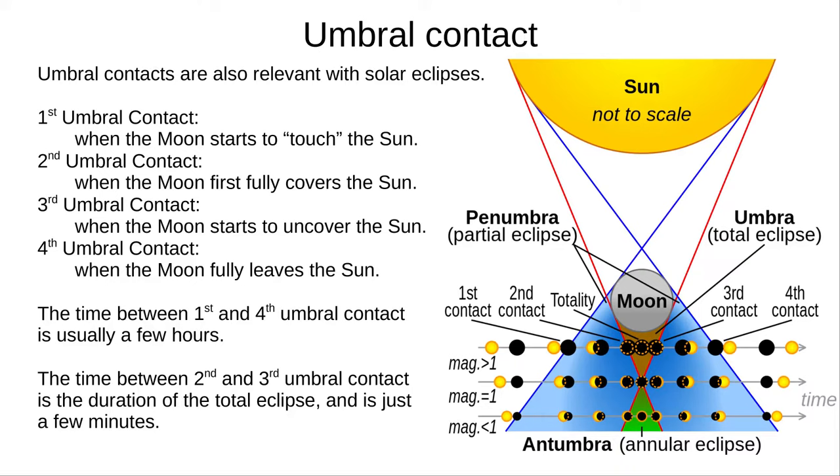Third umbral contact is when the Moon starts to uncover the Sun. And fourth umbral contact is when the Moon fully leaves the Sun. A solar eclipse lasts from first to fourth umbral contact, usually a few hours. But the total eclipse lasts only from the second to the third umbral contact, only a few minutes.